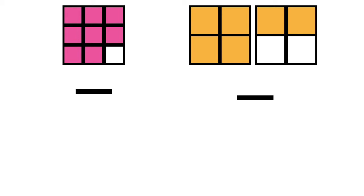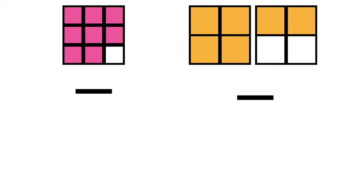Let's write the numerator by counting the shaded parts. Let's count together: 1, 2, 3, 4, 5, 6, 7, 8. We have 8 shaded parts, so that means our numerator is 8. How about the denominator? What is our denominator here? Very good, children! It's 9, since we have 9 equal parts.